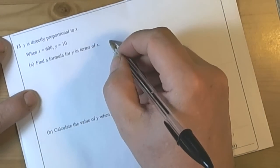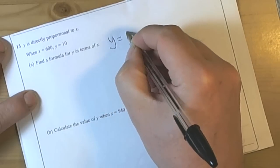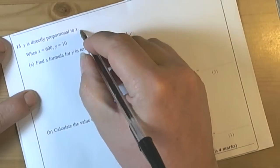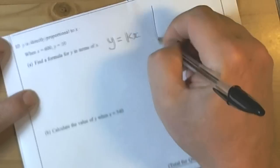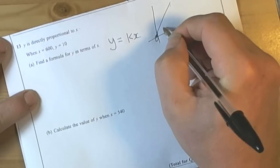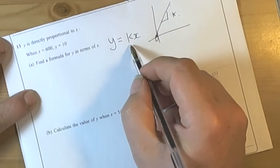Right, so the first thing to do is to recognize it's direct proportion. So y equals k times x in this case. The relationship is directly proportional, so it goes through 0 and the gradient of the line is k, the constant.